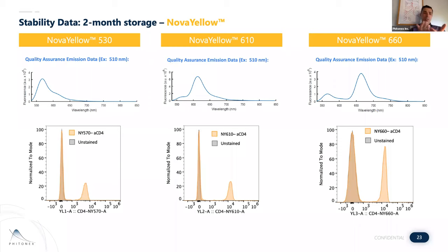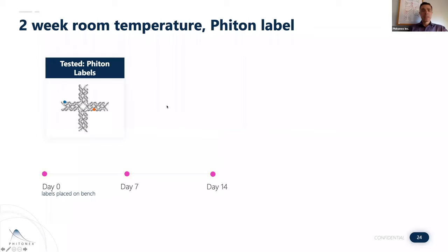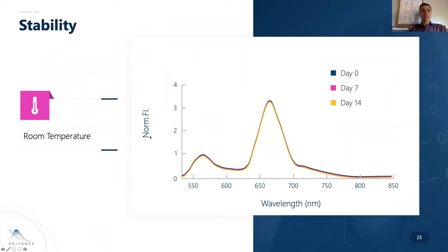The second experiment: what about two weeks of room temperature stability for just the Phytonics label itself? We tested this and pulled out aliquots at day 7 and day 14. There's actually no change anywhere in the spectrum for the label itself out to at least two weeks. The label, due to its structural stability, is just incredibly clean. The DNA structure is very rigid and quite hydrophobic — it's just kept in solution. We've never seen aggregates when performing this kind of testing.